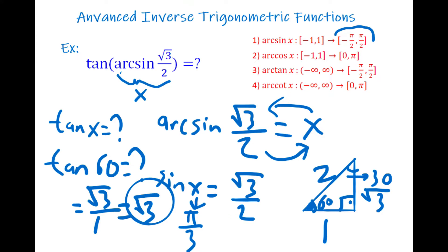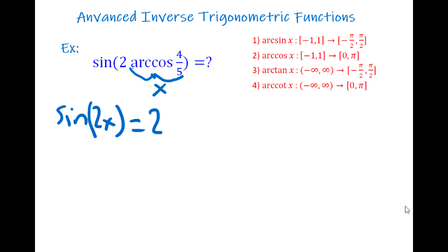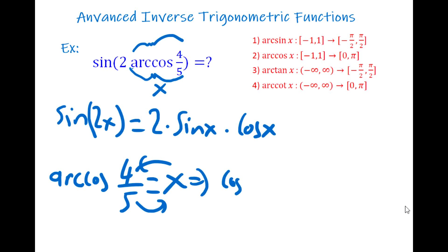Our next question: sin(2·arccos(4/5)) — what is its value? Let's call arccos(4/5) = x, so the question becomes sin(2x). Now sin(2x) = 2·sin(x)·cos(x). Looking at the inside, arccos(4/5) = x means cosine x = 4/5.